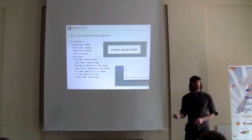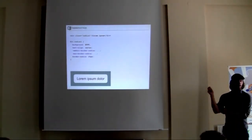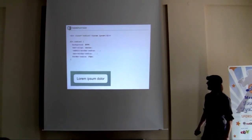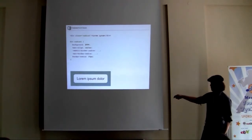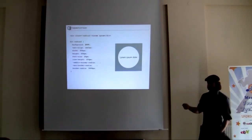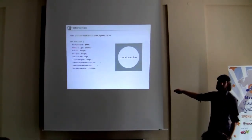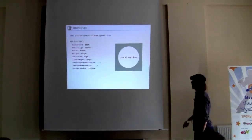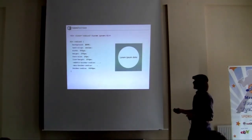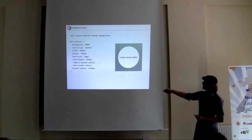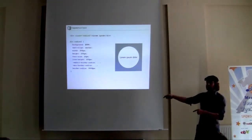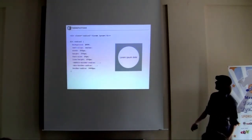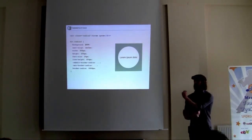Something else people use a lot these days is rounded corners. This is just a simple example with WebKit and Mozilla prefixes — those are the only ones you need. A simple 20-pixel border-radius gives you a 20-pixel border radius. You can also create circles by making an element 200 pixels wide and 200 pixels high, then using a border-radius of 9999, which ensures it's always a circle. If you want to change the size, you only have to change those two dimension values.